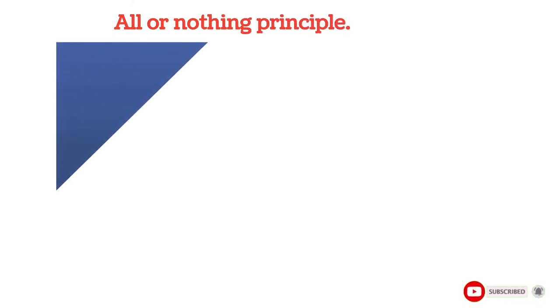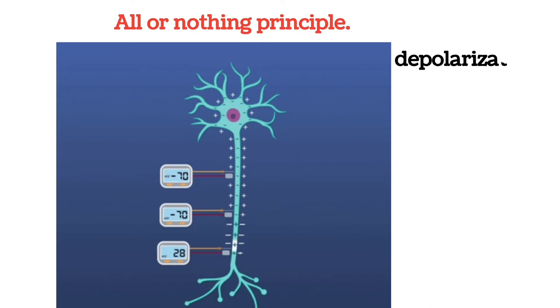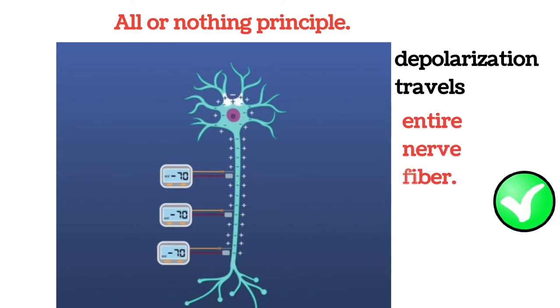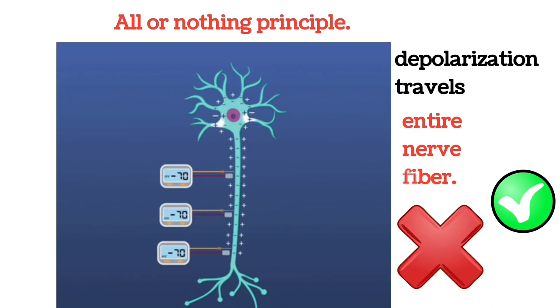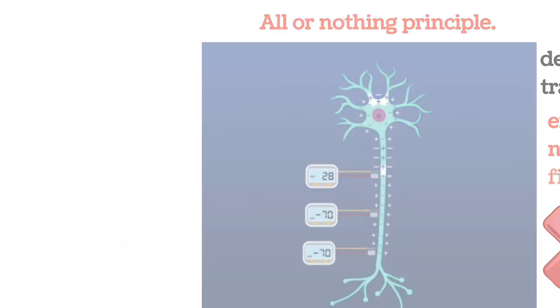All or nothing principle: once an action potential has been elicited at any point on the membrane of a normal fiber, the depolarization process travels over the entire membrane if conditions are right, but it does not travel at all if conditions are not right. This principle is called the all or nothing principle, and it applies to all normal excitable tissues.